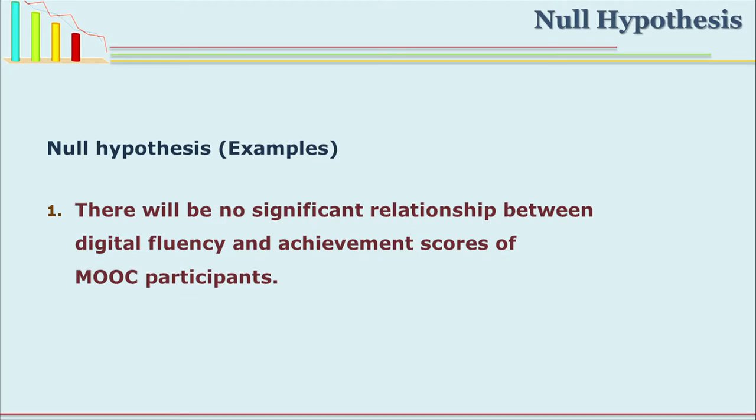We will see some examples of null hypothesis and how they are stated. For example: there will be no significant relationship between digital fluency and achievement scores of MOOC participants. This null hypothesis is not about the difference; it is about the relationship. So you have to use a different statistic, say for example coefficient of correlation, to find out whether this null hypothesis can be rejected or retained.